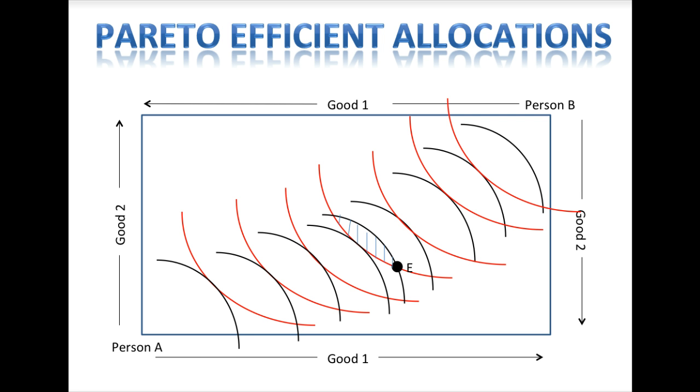If we draw a line connecting all of these tangency points, we have defined a set of points which is called the Pareto set. This line is also called the contract curve because it lays out all the possible combinations of goods 1 and 2 that could be agreed upon if Person A and Person B write a sales contract. Note that because Person A's and Person B's indifference curves are tangent at every point along the contract curve, the slopes of their indifference curves are the same at all these points. This means that their marginal rates of substitution at these points are equal. As we will see, these marginal rates of substitution will define the prices at which each person is willing to buy or sell units of good 1 or good 2.